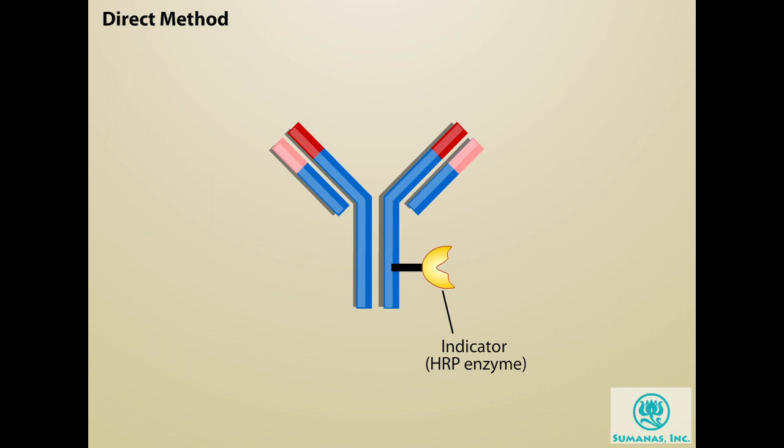Different indicators include fluorescent molecules, biotin, or in this case, the enzyme horseradish peroxidase, or HRP.